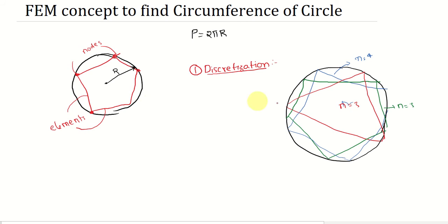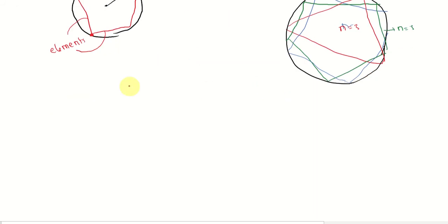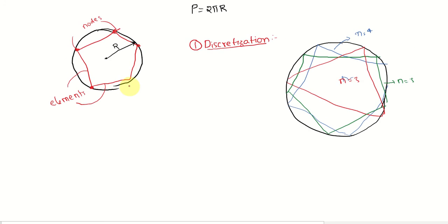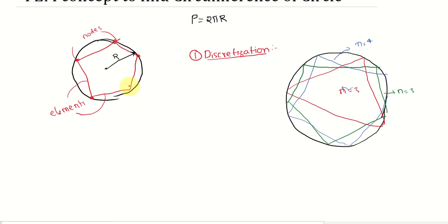The mesh is the connection of all elements and has some number of elements n. We need to find the perimeter, and we have decided to divide into five elements. That completes the first step: discretization.